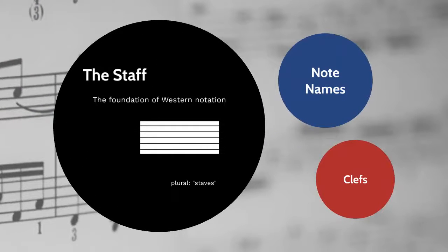Let's start with the foundation of all Western Notation, the staff. The modern staff is made up of five lines and four spaces. Each line or space corresponds with a white note on a keyboard, and it's on staves that music notes are written.